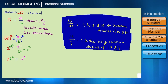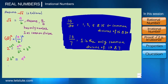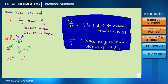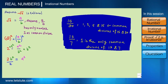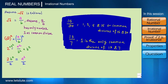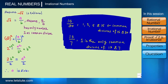Since b is an integer, b² is an integer, and there is a multiplication of 2 in b², so 2b² is divisible by 2. Since 2b² = a², we can say a² is also divisible by 2. Since a² is divisible by 2, a is also divisible by 2.